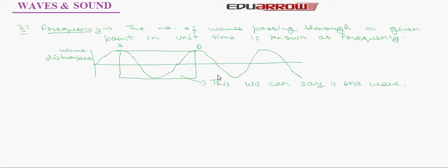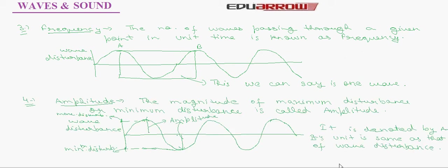Now let us talk about amplitude. The magnitude of maximum disturbance or minimum disturbance is called amplitude. The amplitude is denoted by A. Its SI unit is same that of wave disturbance. For example, if wave disturbance is expressed in density or pressure, then the unit of amplitude will be that of density or pressure, like kg per meter cube or Pascal. In this figure, the straight line represents the average. This is the maximum disturbance and this is the minimum disturbance. Both of these magnitudes are same. And this is what is amplitude.